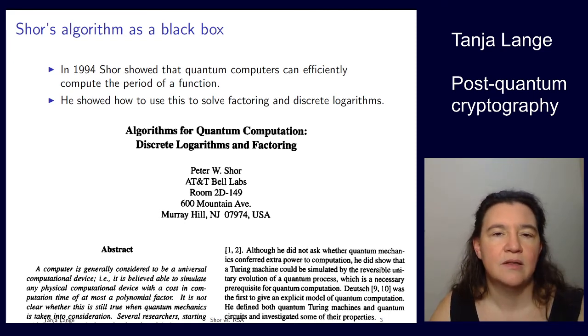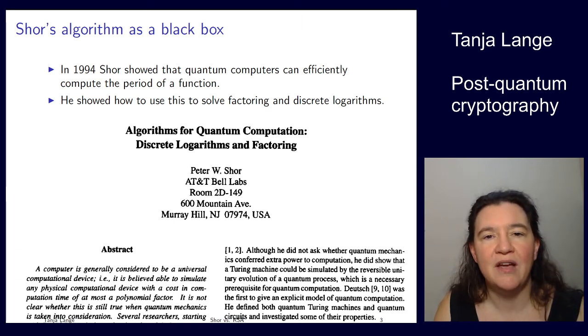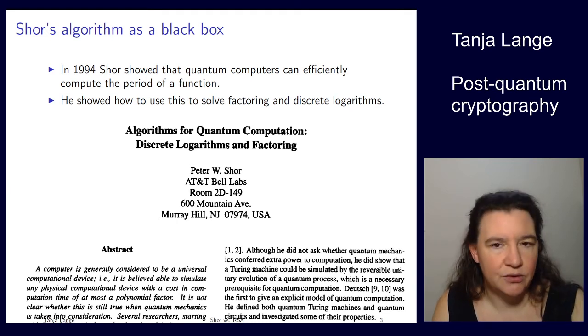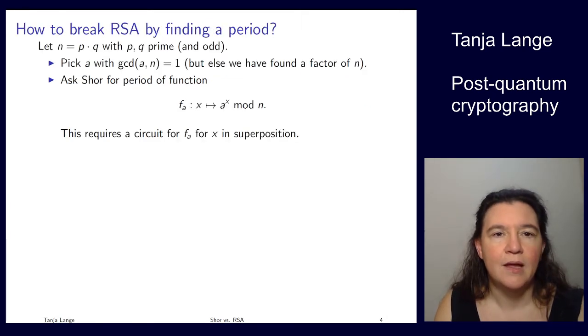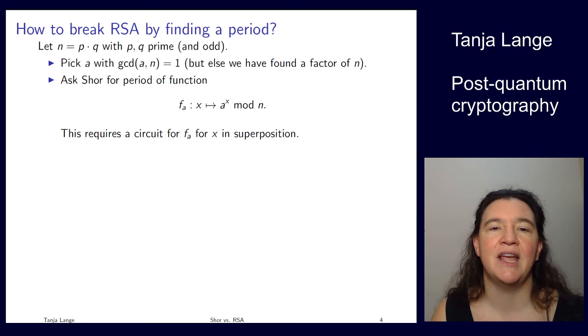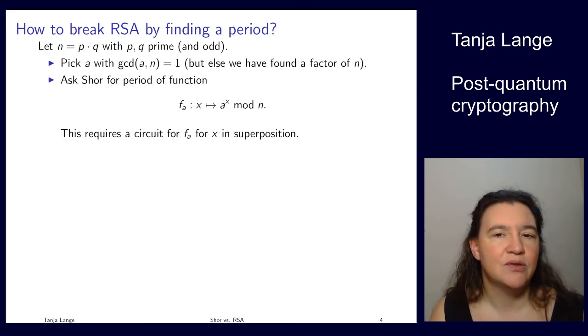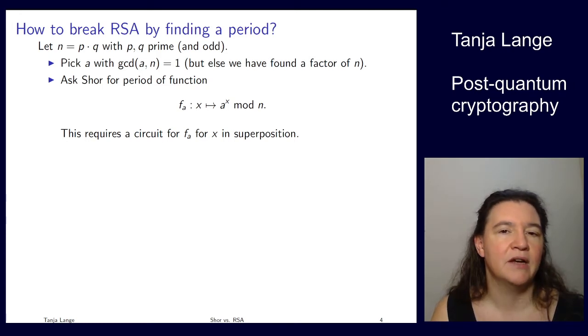Now what does this do, like, one level into? We're not looking at how it's implemented. But if we have a period-finding algorithm, how can we use this to break factoring? I'll focus on factoring for this one, attacking everything. So here we are again with n = p*q. And we start by picking some a which is coprime to n. Again, essentially any a will work, and else you have already factored it.